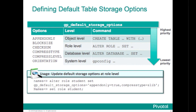The server configuration parameter GP default storage options lets you define storage options to be applied by default — we looked at this in the demo. The options are a comma-separated list. The default behavior can be set at different levels: at the role level using ALTER ROLE, at the database level using ALTER DATABASE, or at the global cluster level using gpconfig. Specifying options using CREATE TABLE takes precedence over all other forms. For example, a DBA can alter the student role to set up storage options specific for that account.